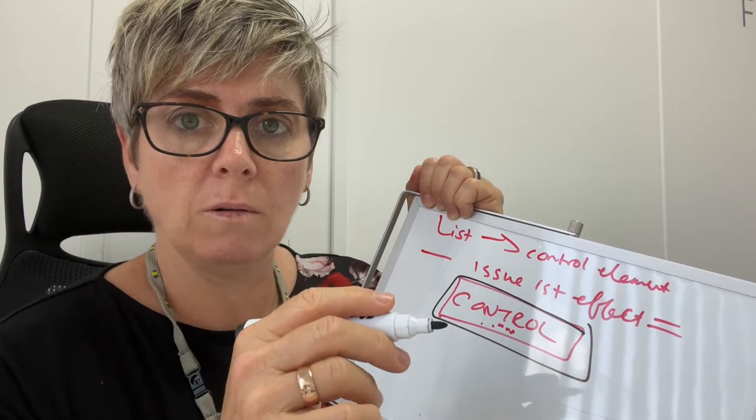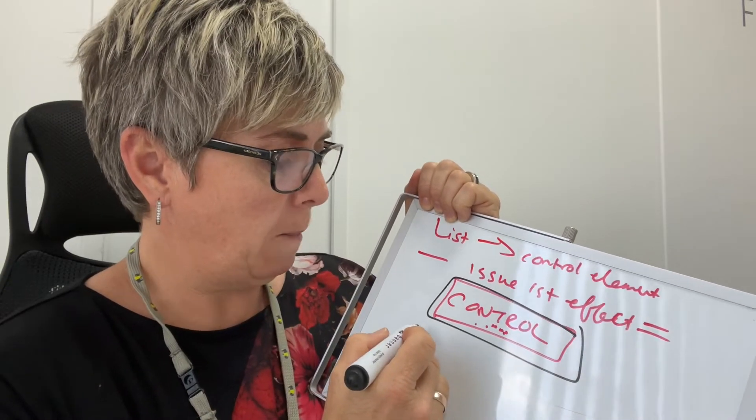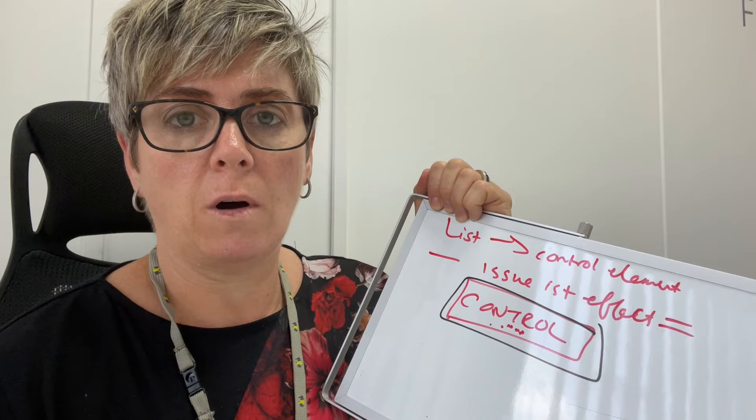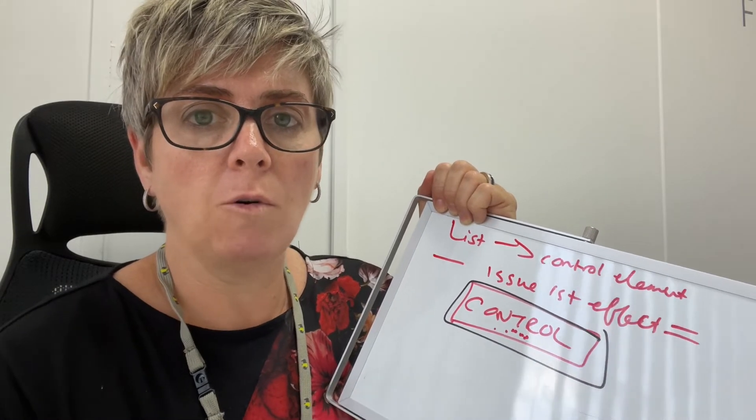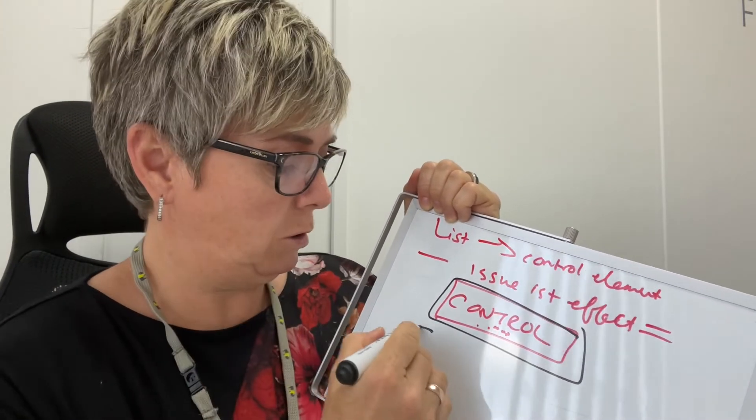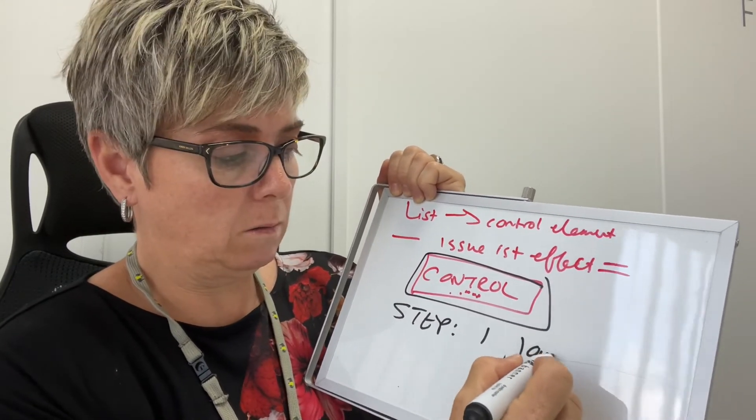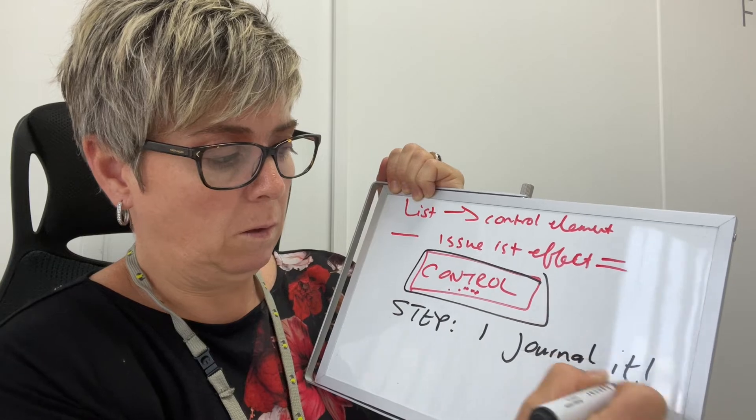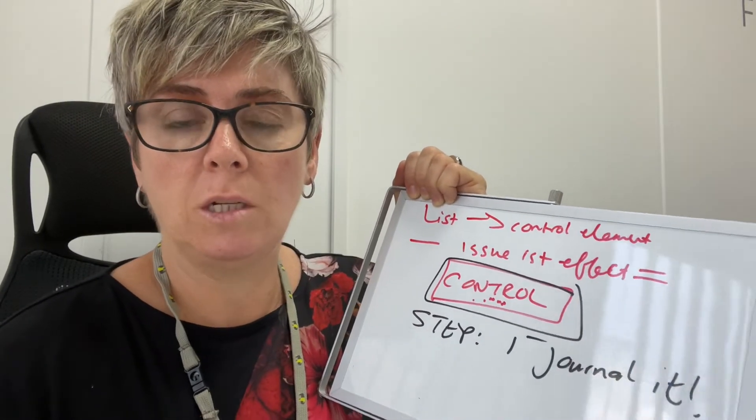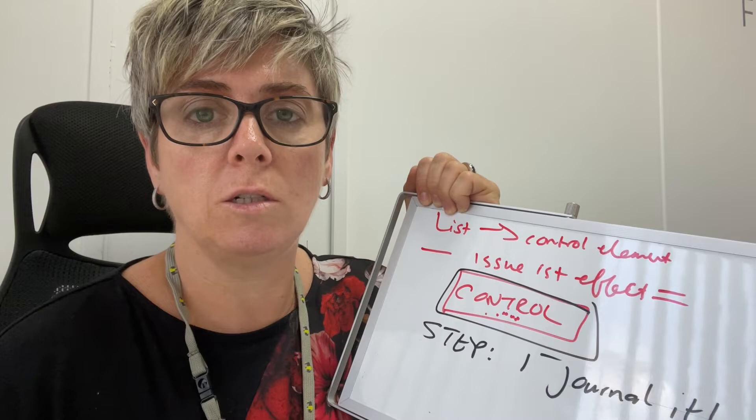What I want you to do is look at your external environment, look at the overwhelm or overdrive you're going into, and I want you to do step one: just journal it. When you've done this, post it in the group for me and I'll let you know what I think you need to do.